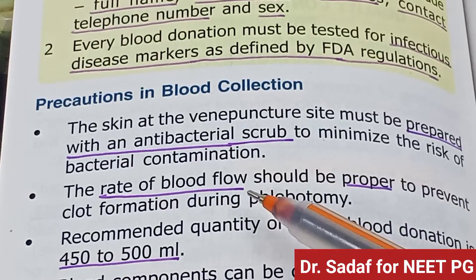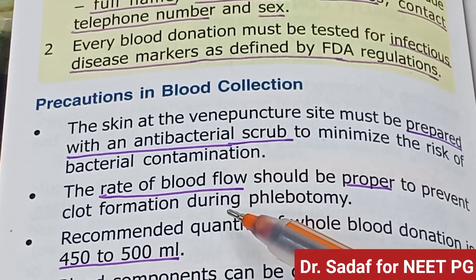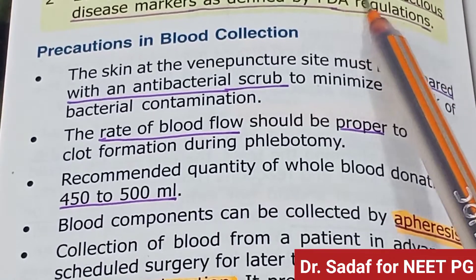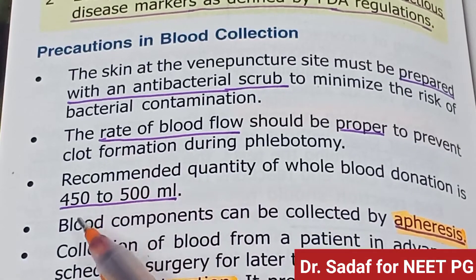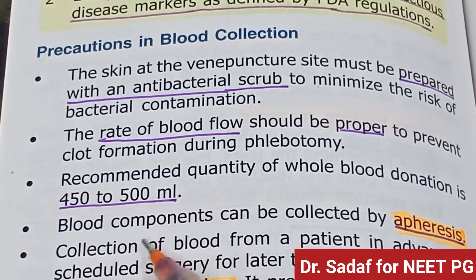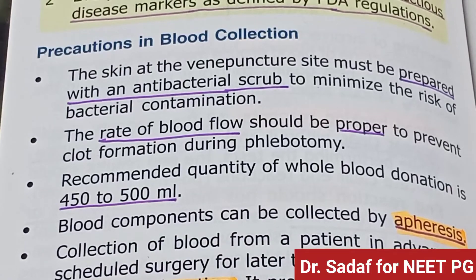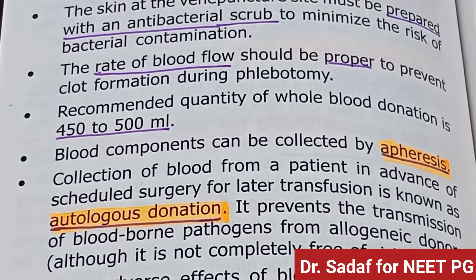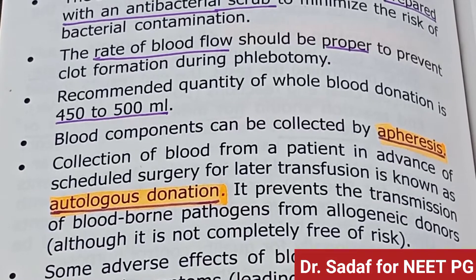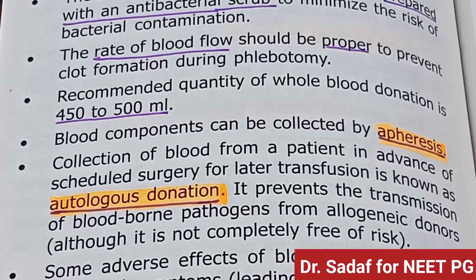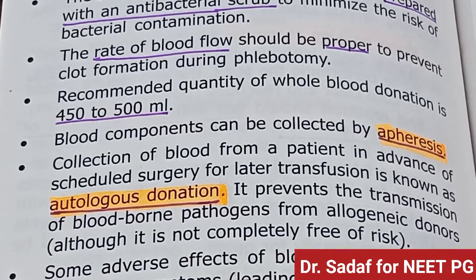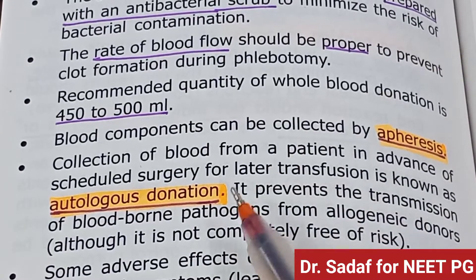The rate of blood flow should be proper to prevent clot formation during phlebotomy. The recommended amount for whole blood donation is 400 to 500 ml. Blood components can also be collected by apheresis. Collection of blood from a patient in advance of scheduled surgery for later transfusion is known as autologous donation.